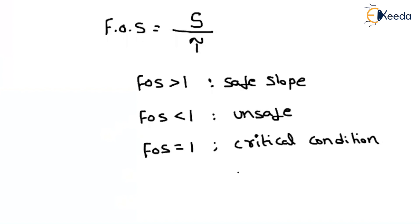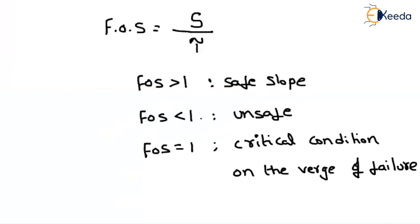We can also say that it is on the verge of failure. That means even if the shear stress is greater by just 1 MPa or 0.1 MPa, the slope will fail. That is why it is called on the verge of failure. For stability of the slope, we must ensure that the shear strength capacity is greater than the shear stress acting on the layer.